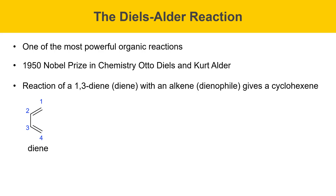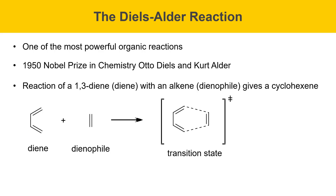A 1,3-diene reacts with a dienophile, and these come together in a transition state where the dotted lines indicate where new bonds are going to be forming. The structure is shown in brackets with a double dagger to indicate that this is a transition state — it isn't an intermediate you could isolate, but the reaction arranges itself this way on its way from reactants to products. The product is a cyclohexene, which has two new sigma bonds, and also a new pi bond.